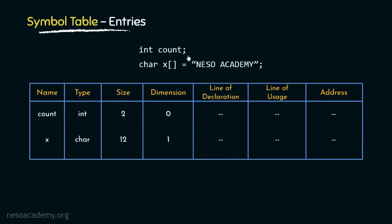None of the attributes are of fixed size, so it is not possible to know how much space the symbol table will require before it is actually created. Choosing a size too small means we cannot store all entities, while choosing too large leads to space wastage. Considering these circumstances, the best solution is to dynamically allocate the size of the symbol table during compile time.